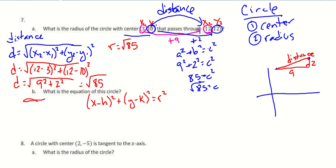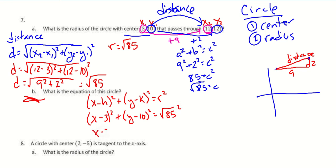For part B, the equation: we have the center (3, 10). Plugging in, it's x minus 3 squared plus y minus 10 squared equals r squared, which is the square root of 85 squared, so it equals 85. If there were any double negatives, they'd become positives, and the square root of 85 squared just becomes 85.